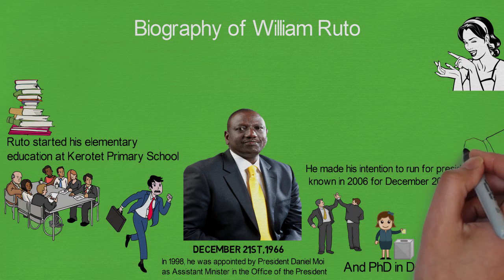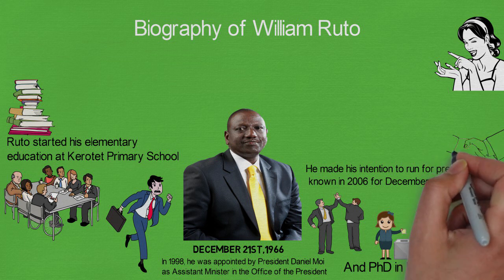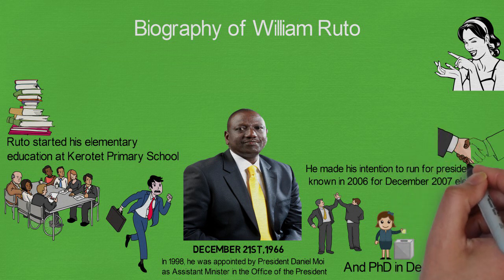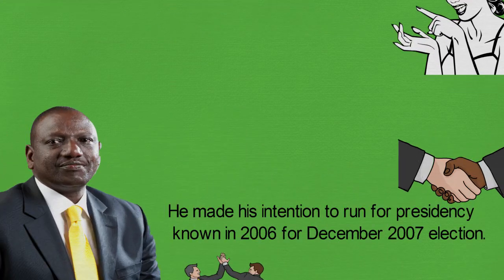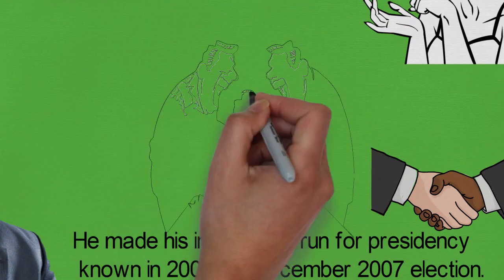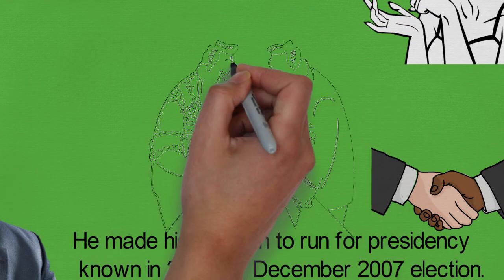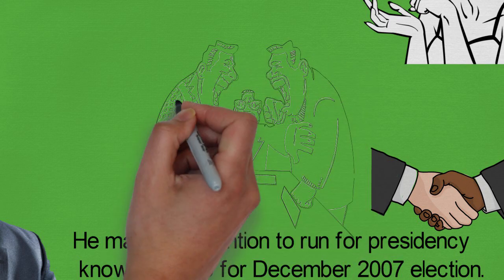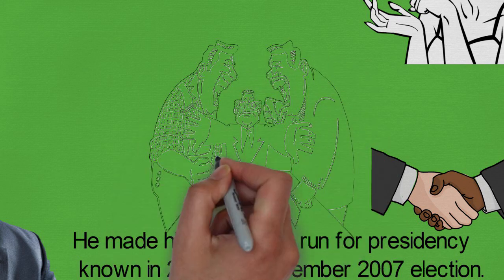Ruto joined the Orange Democratic Movement, ODM, with the hope of being their presidential candidate, but lost the party's primaries. In September 2007, Raila Odinga was selected and Ruto decided to support the candidacy of Odinga. The election of 2007 ended in chaos when Kenya's Electoral Commission declared Kibaki winner, but Raila and ODM claimed they won.